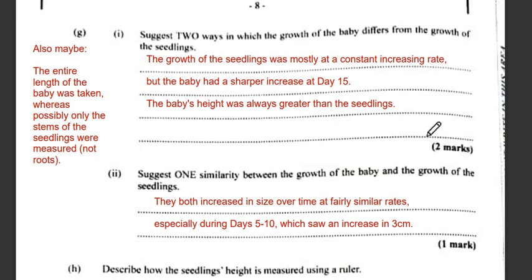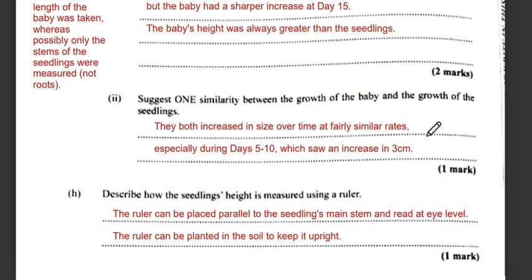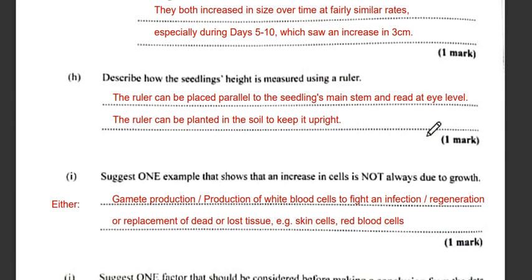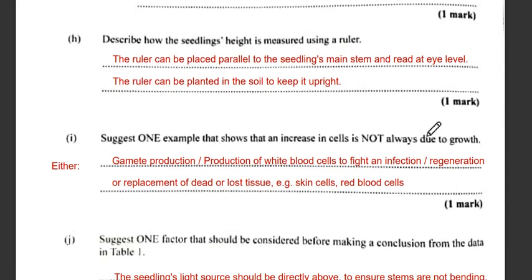For one similarity between the growth of the baby and the seedling, both increase in size over time at fairly similar rates. For example, between day five and day ten, both showed an increase of about three centimeters.